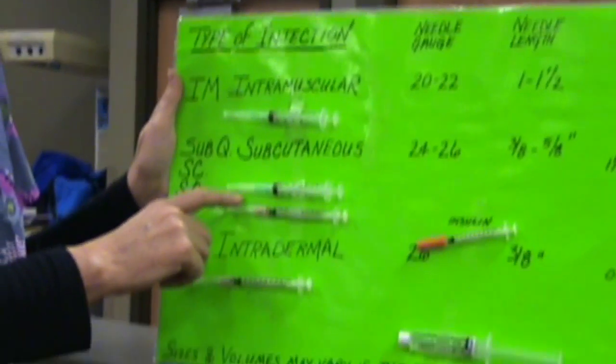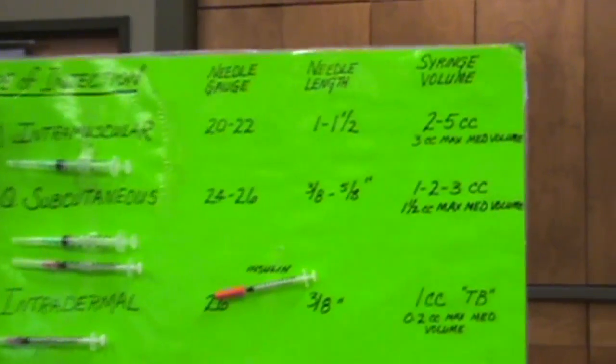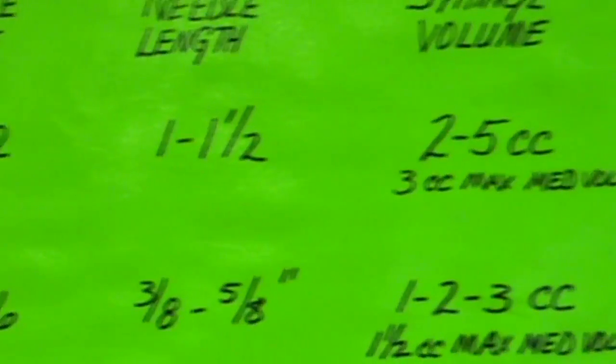Going down to subcutaneous. Up here on the IM, three cc's is the maximum volume that you should give someone, because if you give more than that, it's going to cause scarring in that area.